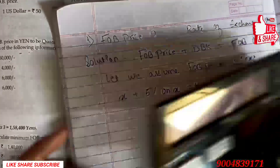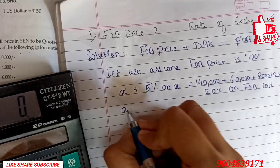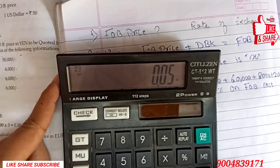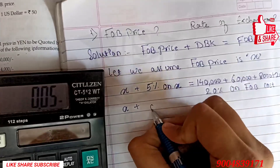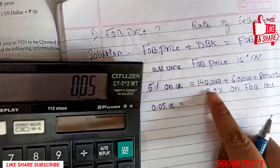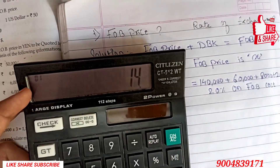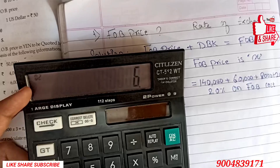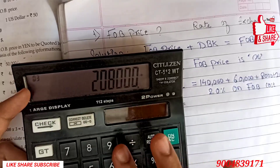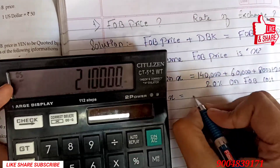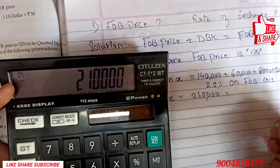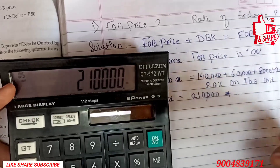First of all, we calculate the value: X plus 5 divided by 100 gives us 0.05X, equal to all costs. So: 1,00,000 plus 60,000 plus 8,000 plus 2,000 — the total cost is 2,10,000.